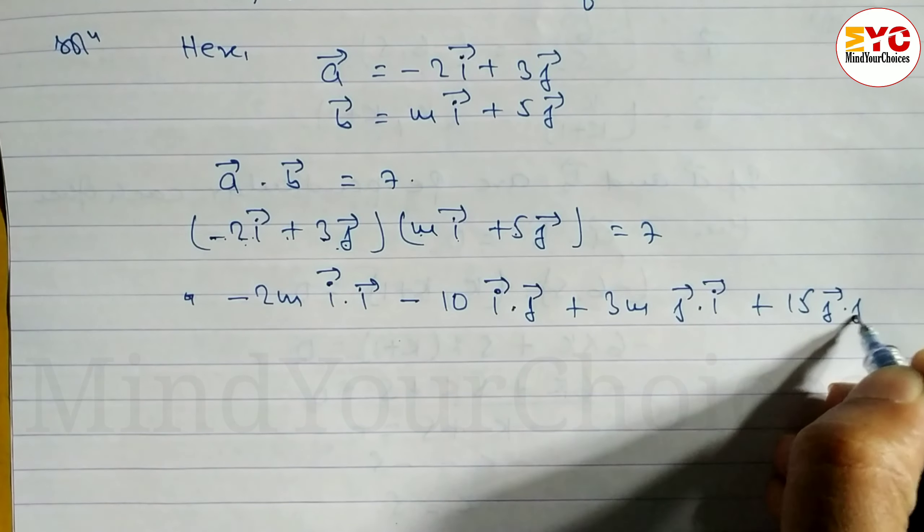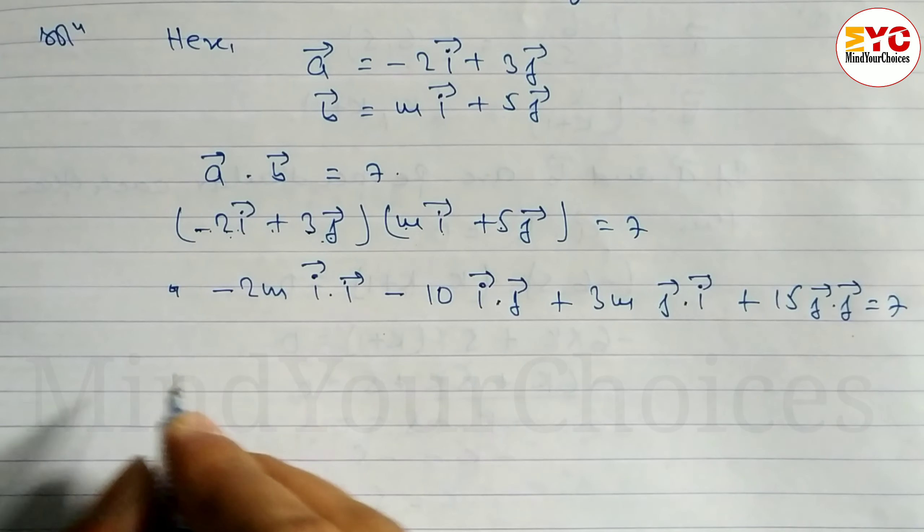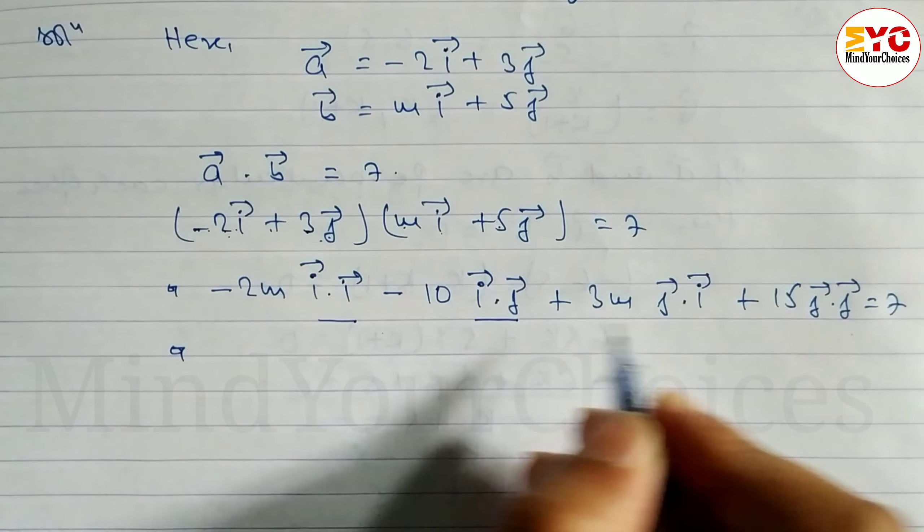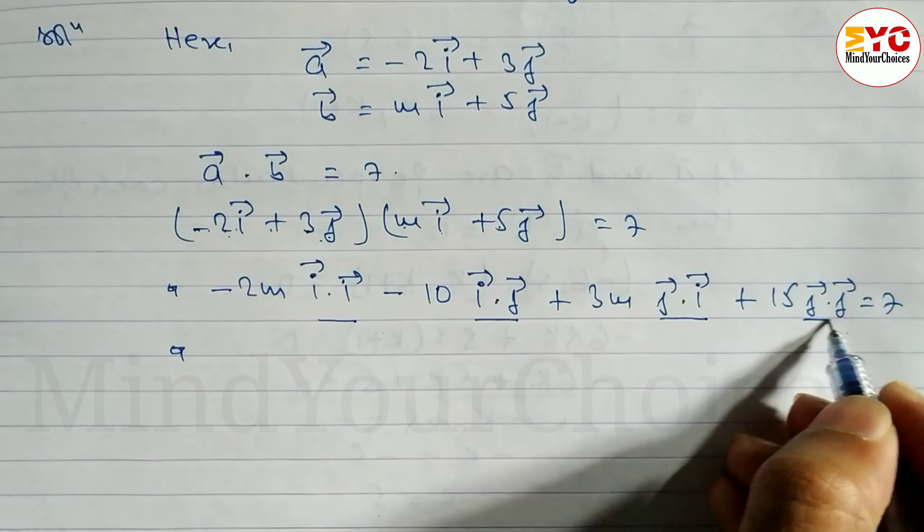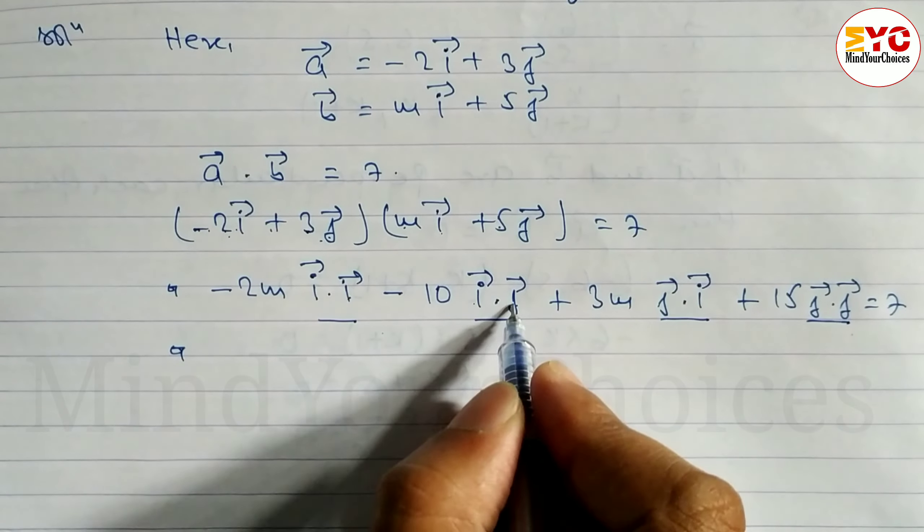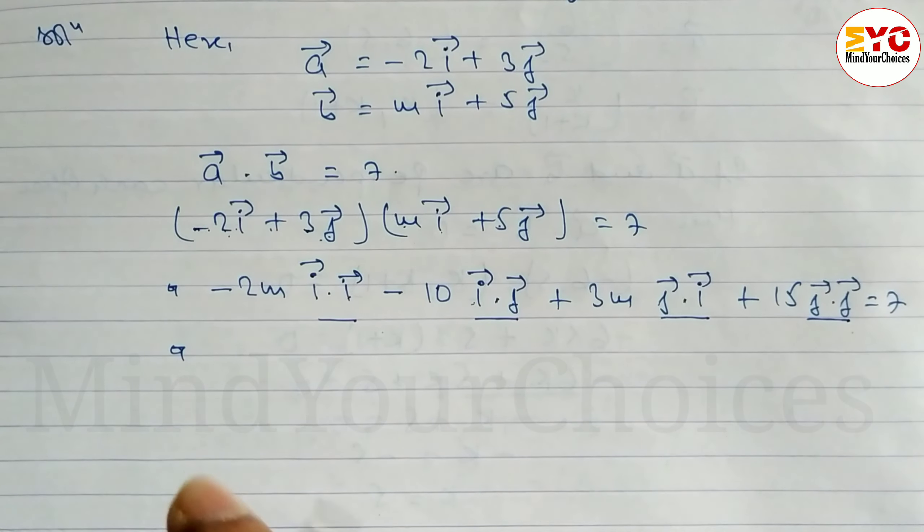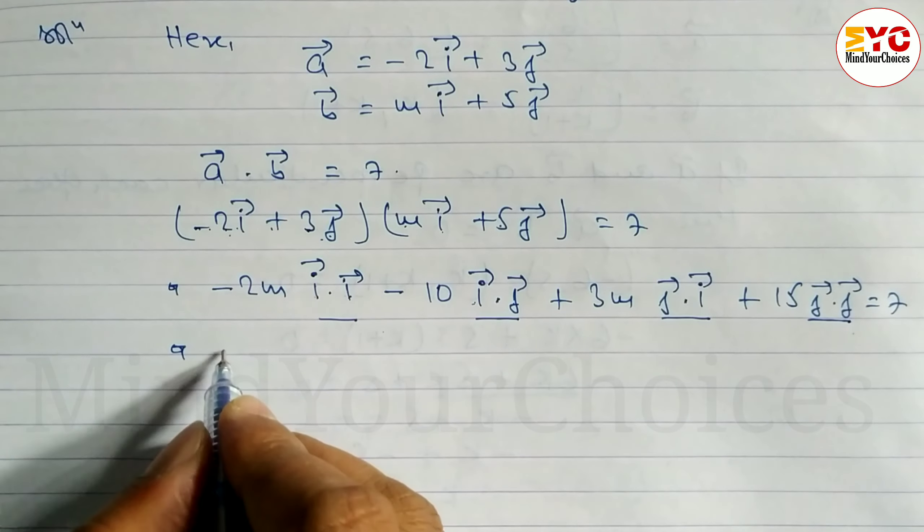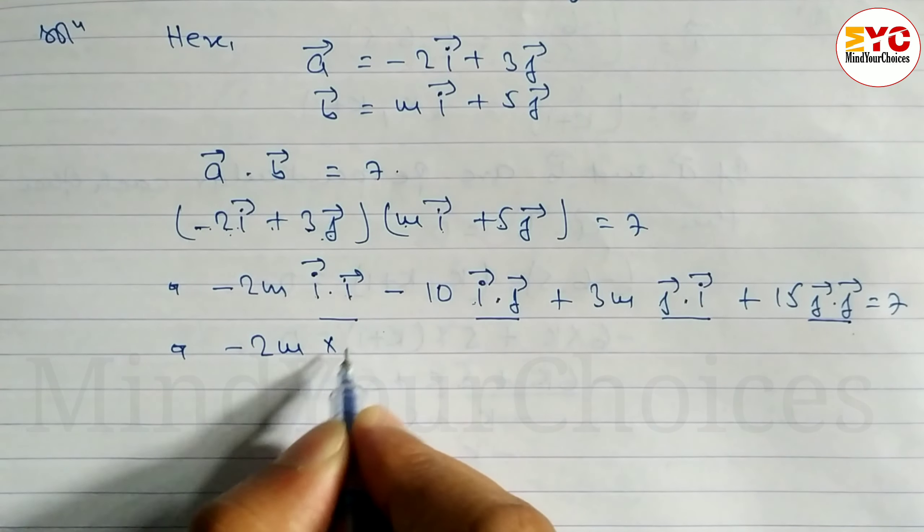Using vector properties: i⃗·i⃗ = 1, j⃗·j⃗ = 1, i⃗·j⃗ = 0, j⃗·i⃗ = 0. So we get: -2m(1) - 10(0) + 3m(0) + 15(1) = 7.